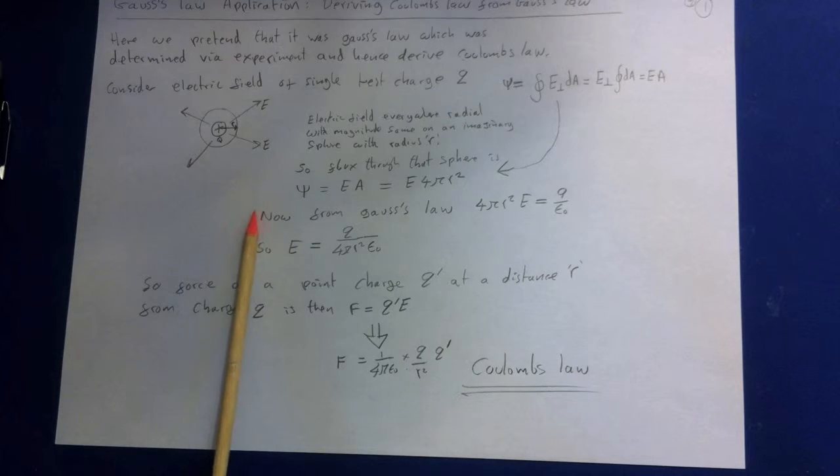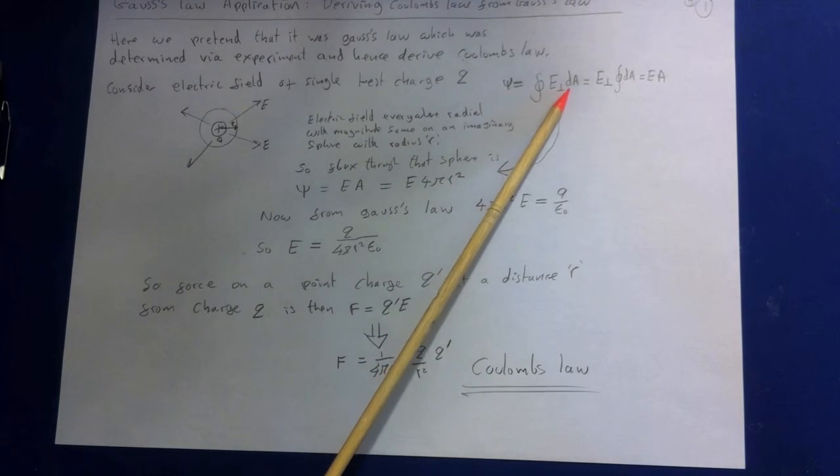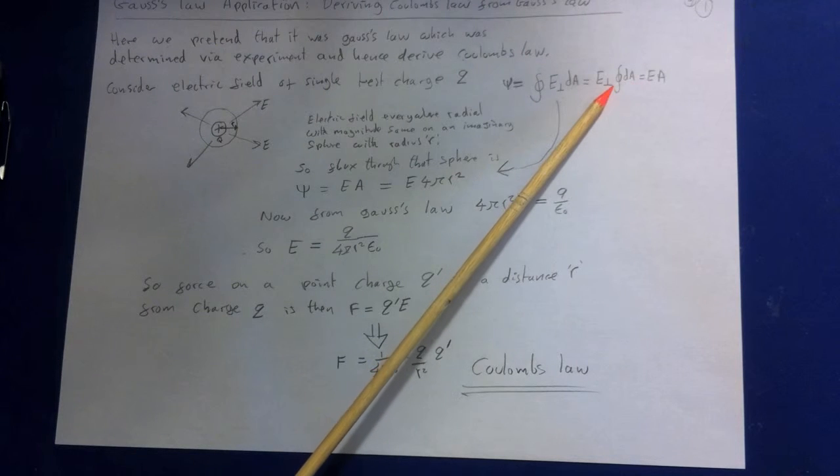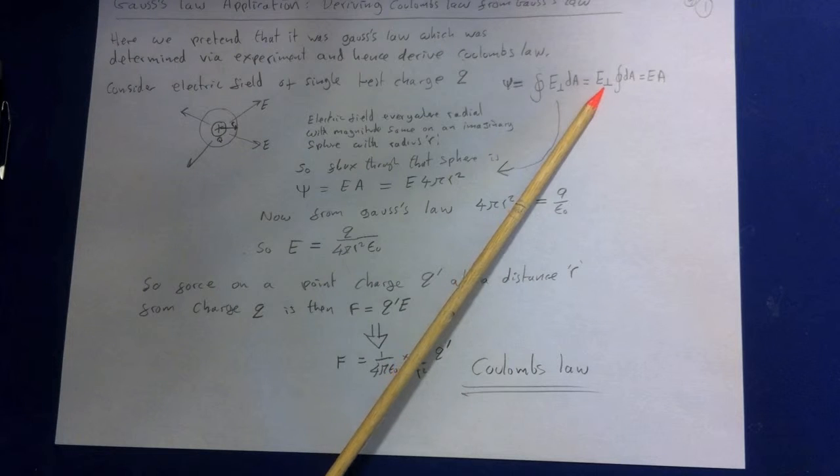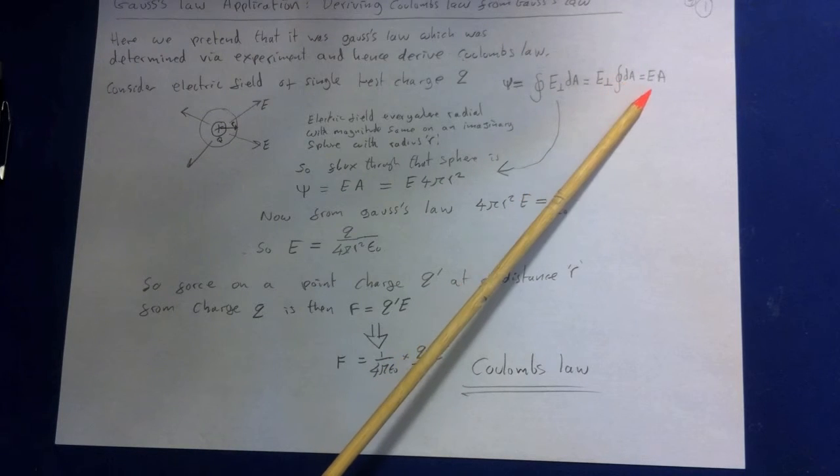So we can write the flux, and obviously it's going to be the same on all points on the surface, so we can bring the perpendicular component to the outside here. And then all we're doing is integrating over the surface dA, which is just the area of the surface.